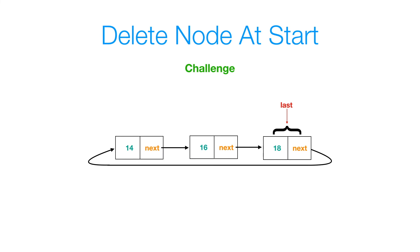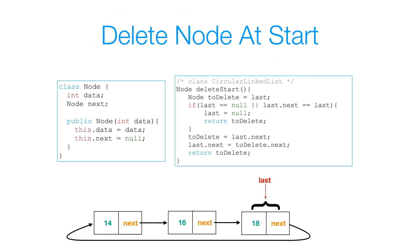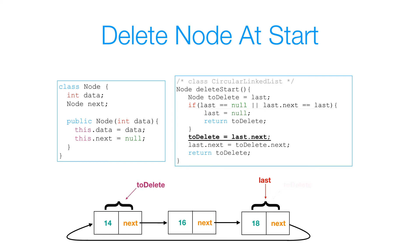Now I challenge you to delete a node at the start of the list — the node with data 14. Pause and press play when you're ready. Here's the solution: since we have a reference to the last node and the front is last.next, all we do is set last.next to front.next. We create a to-delete reference, check if last is null or last.next equals last, then set to-delete equal to last.next and set last.next to to-delete.next. Then return to-delete. Pretty simple.